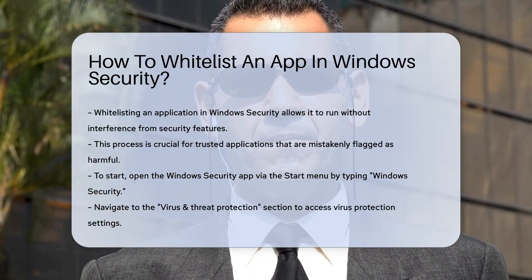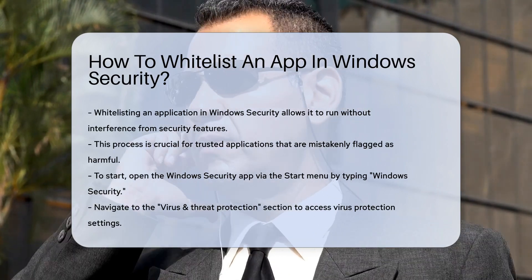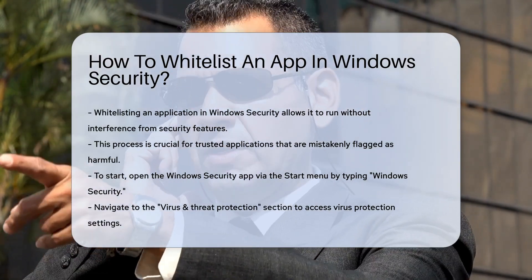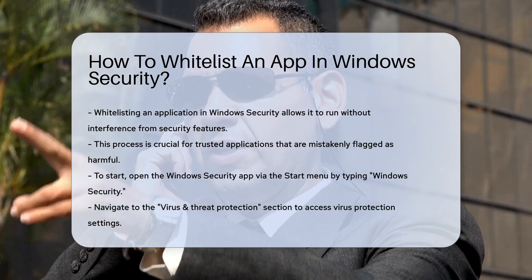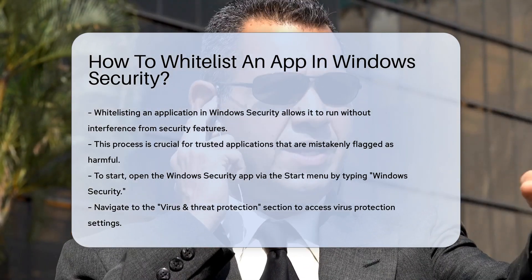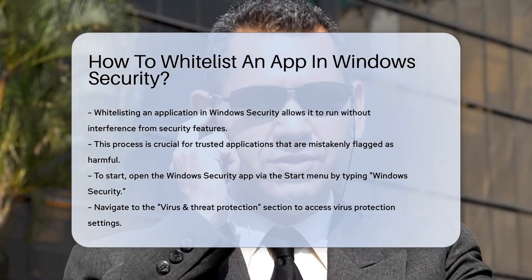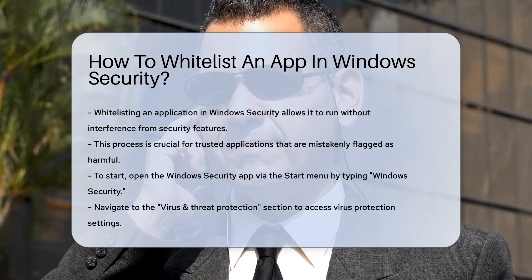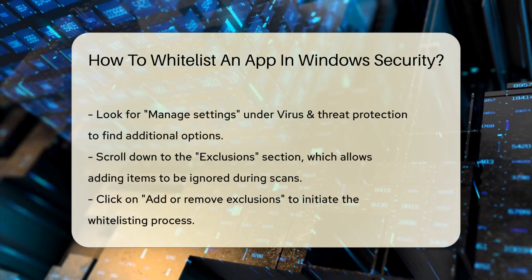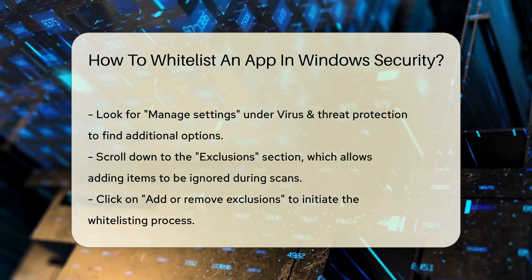To begin, open the Windows Security app. You can access it by clicking on the Start menu and typing Windows Security. Once opened, navigate to the Virus and Threat Protection section. Here, you will find settings related to virus protection and threat management.